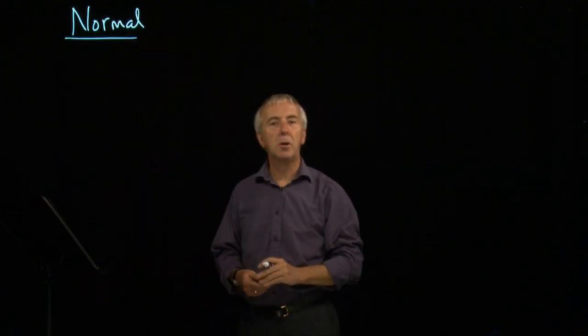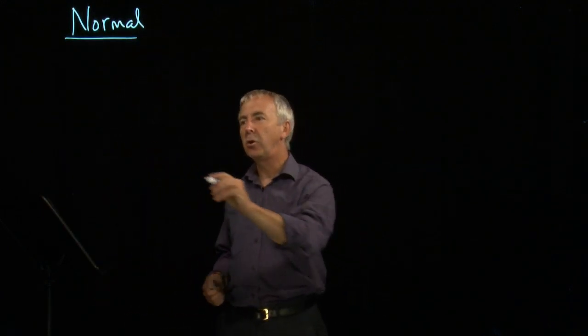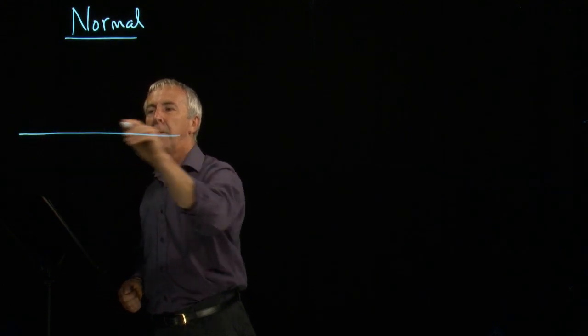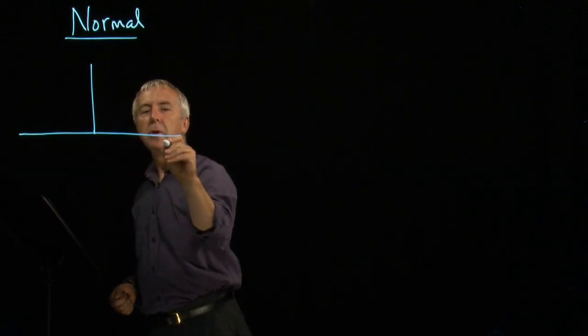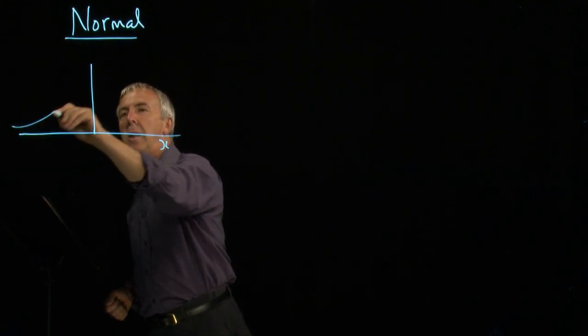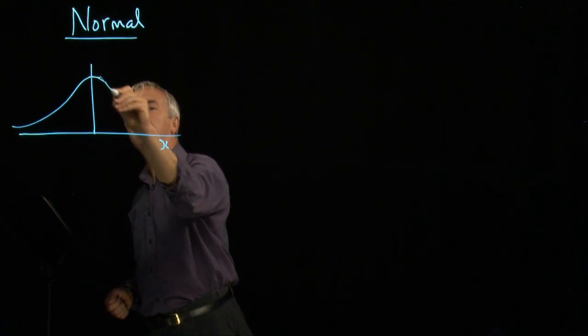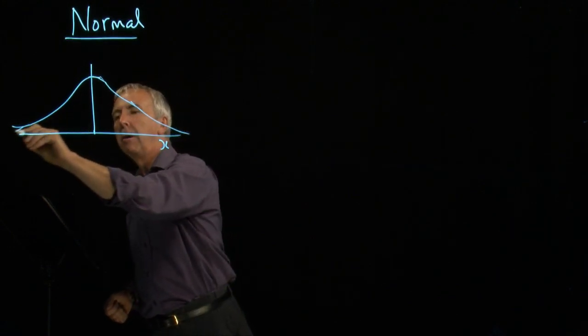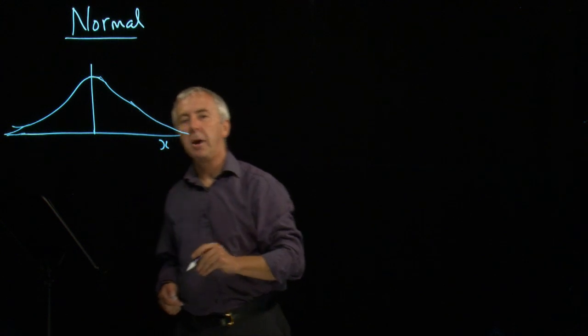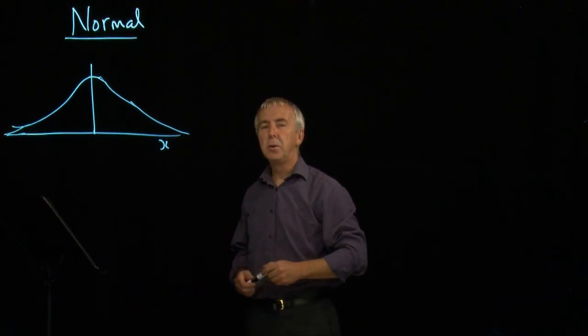The density function, the probability density function, looks like this. This is x and we get the famous bell-shaped curve going down to zero on either side eventually. That's the normal distribution.